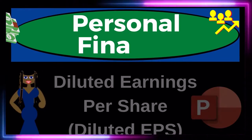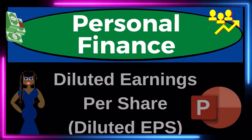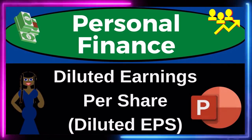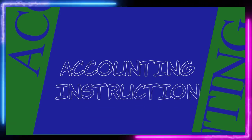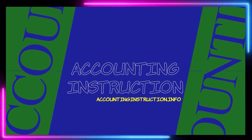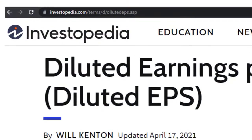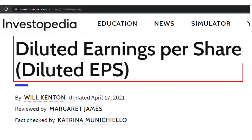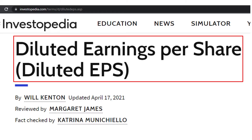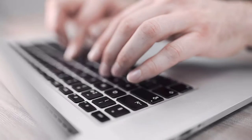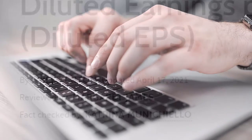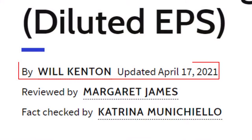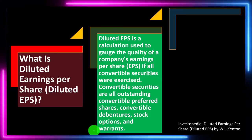Personal finance PowerPoint presentation: Diluted Earnings Per Share (Diluted EPS). Prepare to get financially fit by practicing personal finance. Most of this information comes from Investopedia, which you can find online. Take a look at the references and resources to continue your research. This is by Will Kenton, updated April 17, 2021.